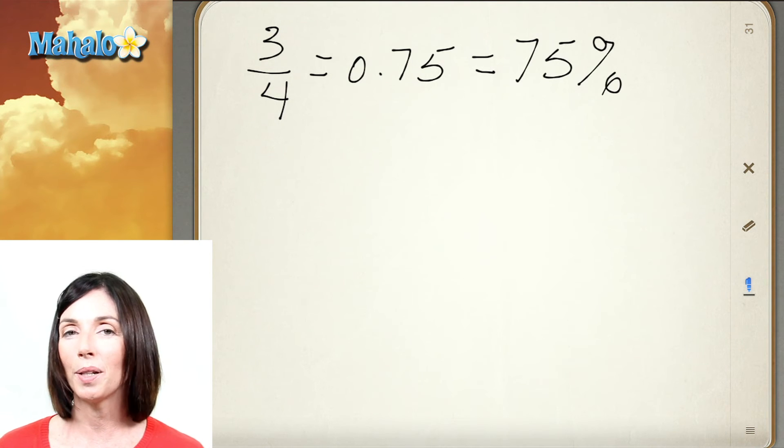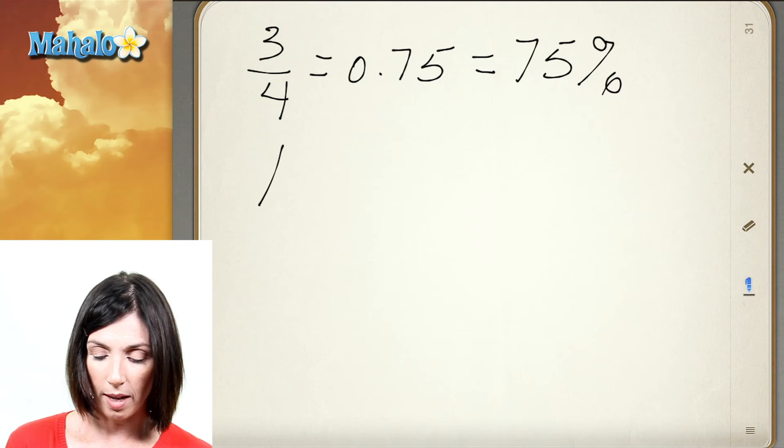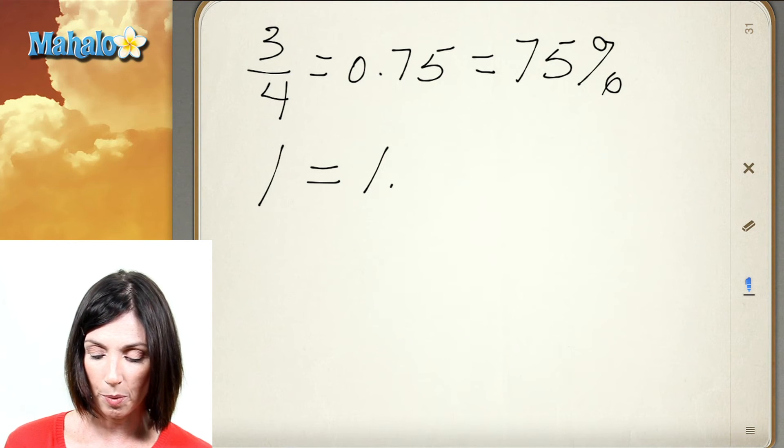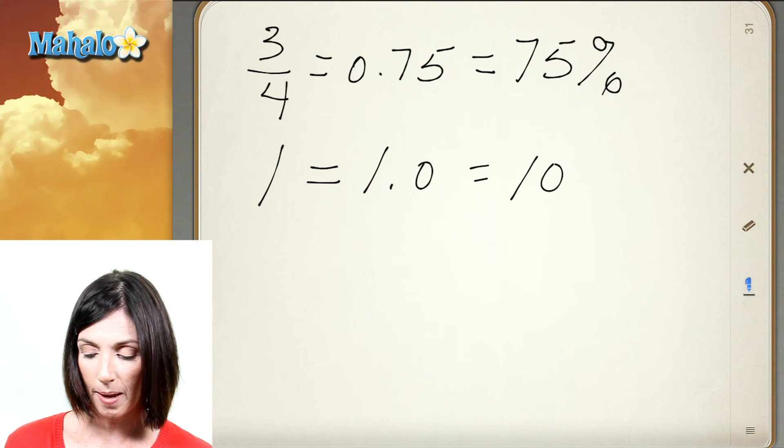What about the number one? Well, one — we can add a decimal place and write it 1.0. And that's 100%.